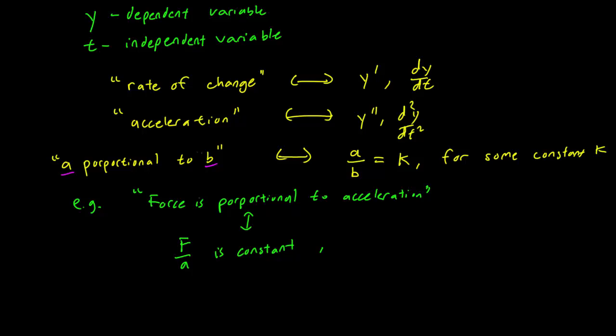And usually in physics we call the constant m. This equation is more familiarly written as F equals ma. And it turns out that the constant is actually equal to the mass of the object, although you can't tell that from the mathematics.